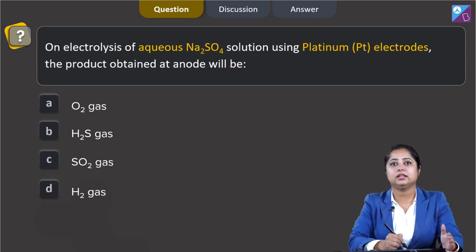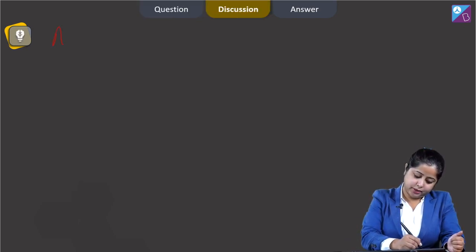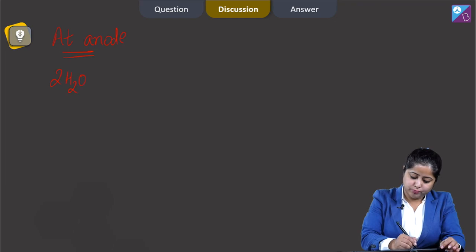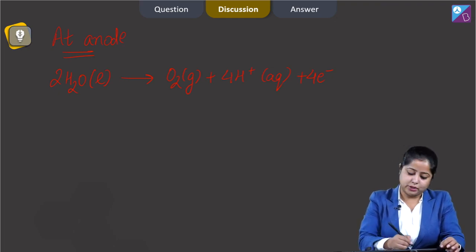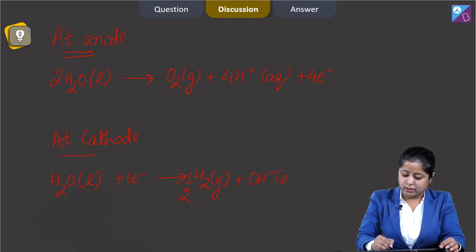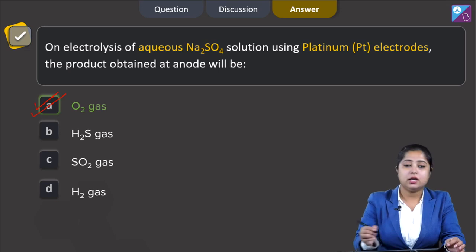For this question, first of all we will be writing the reactions that take place at anode and at cathode. Students, at anode oxidation takes place. The reaction is: 2H₂O (liquid) → O₂ (gas) + 4H⁺ (aqueous) + 4e⁻. Now, the reaction at cathode: H₂O (liquid) gains 1 electron and gives ½H₂ (gas) + OH⁻ (aqueous). That means the product obtained at anode is O₂, so the correct answer is option A.